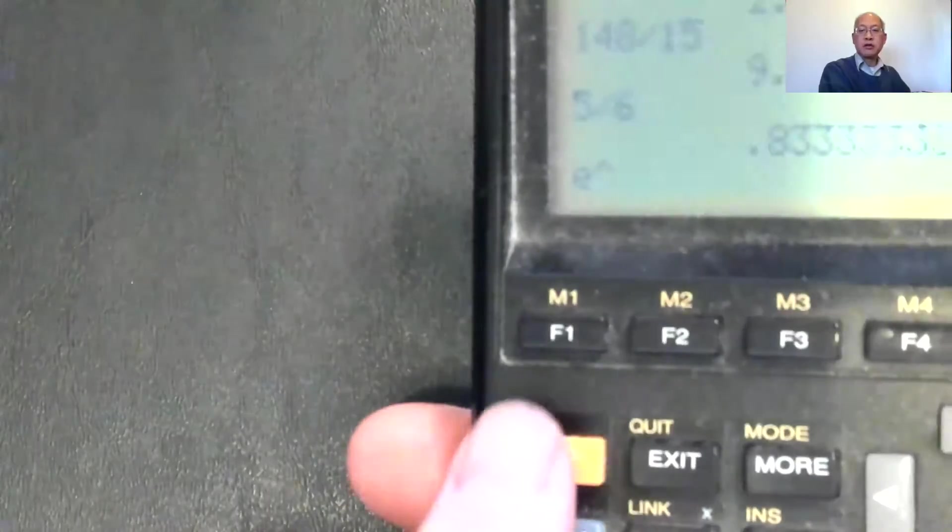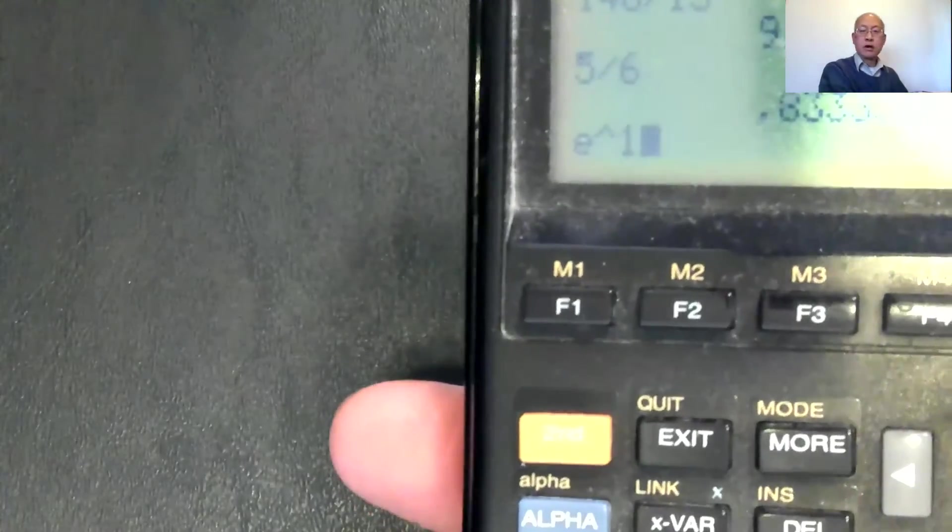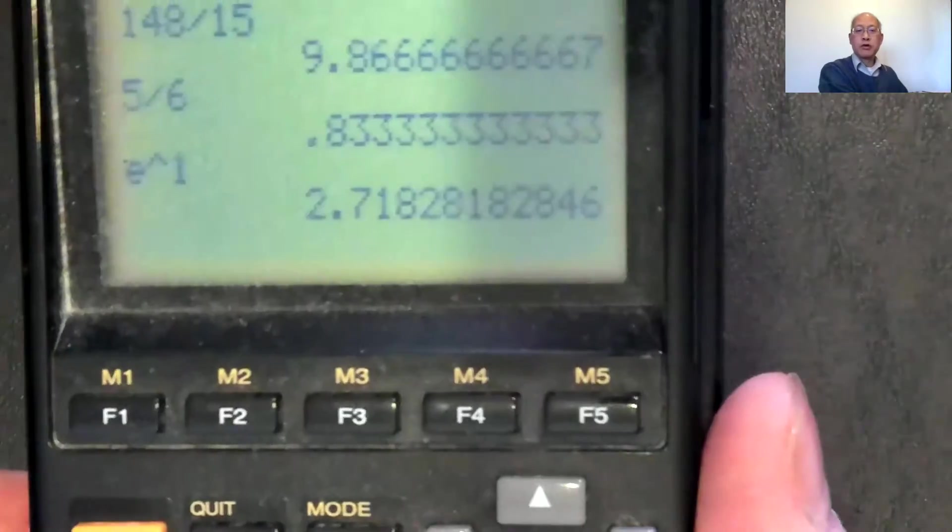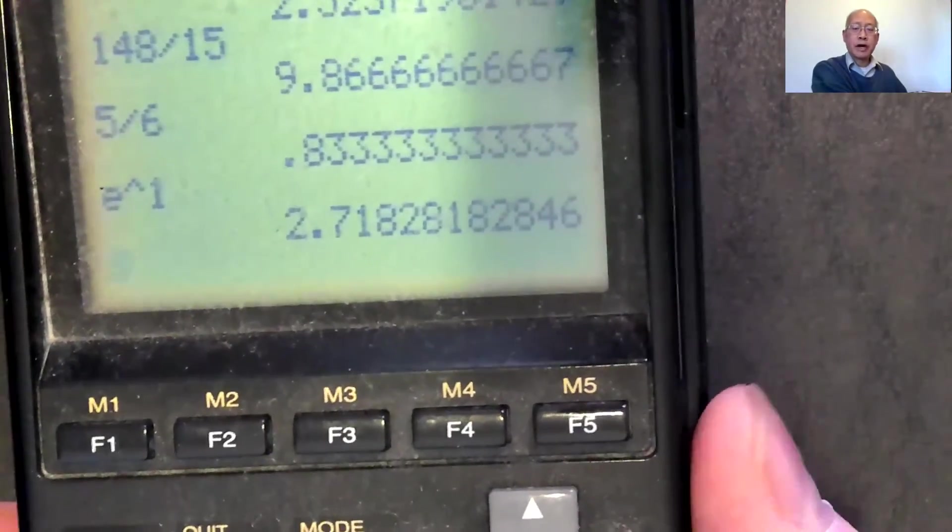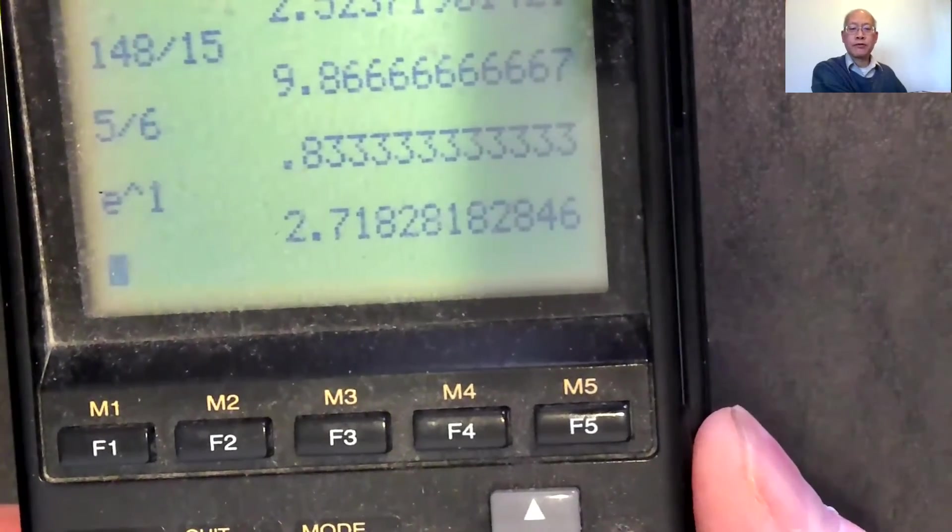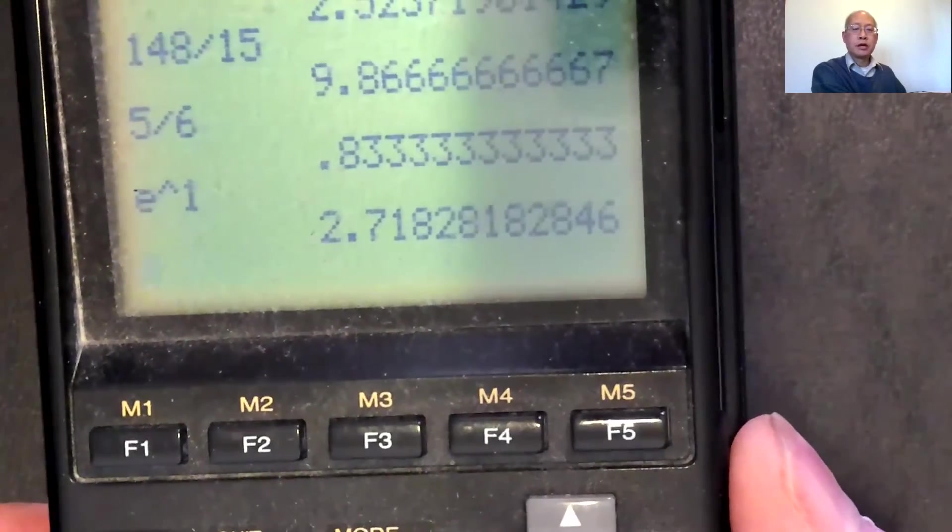Okay, so if you want to see the number e itself, well, you might have an e button, but if you don't, you can take second function ln, that'll show you e. I'll raise it to the first power, and there's the number I just talked about, 2.71828, it's an irrational number like pi, pi goes on forever, 3.14159, blah blah blah.